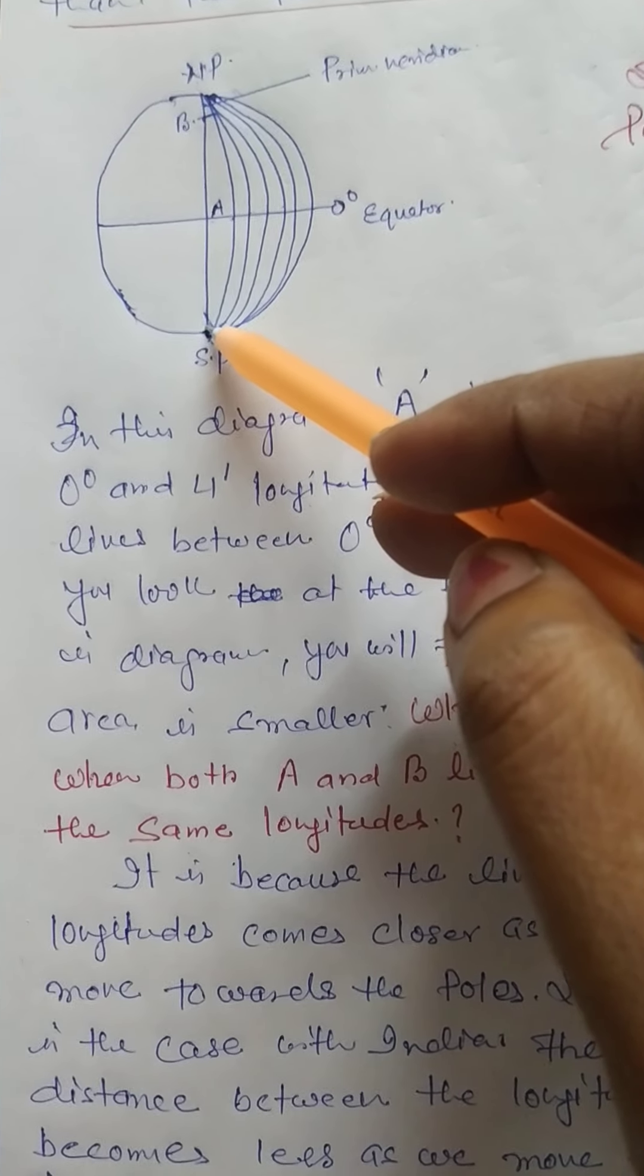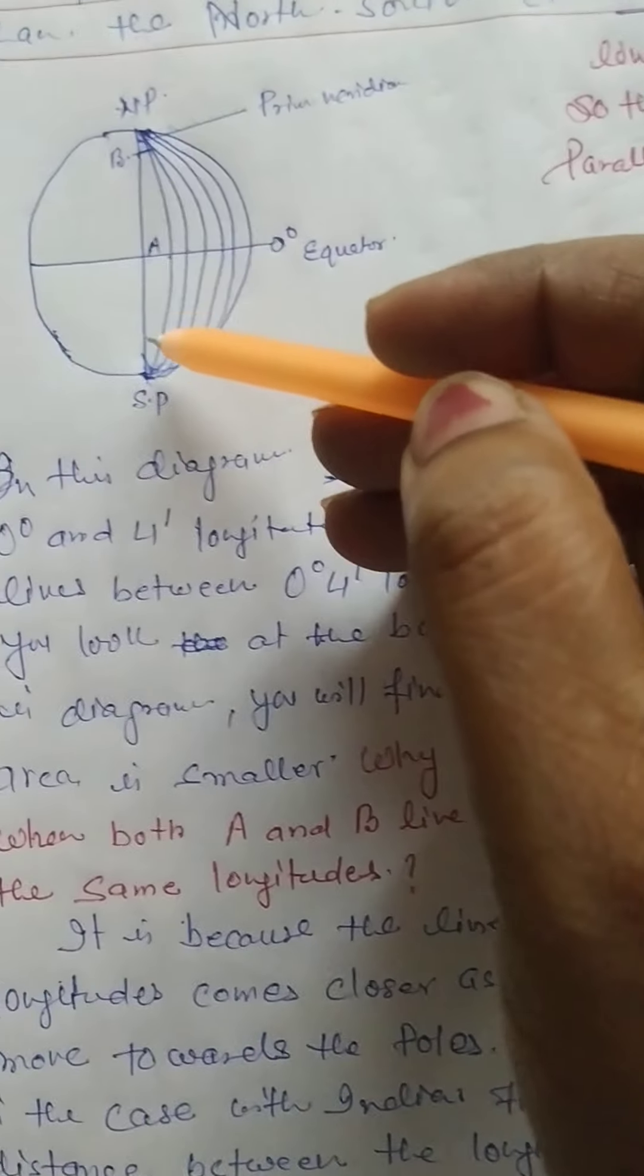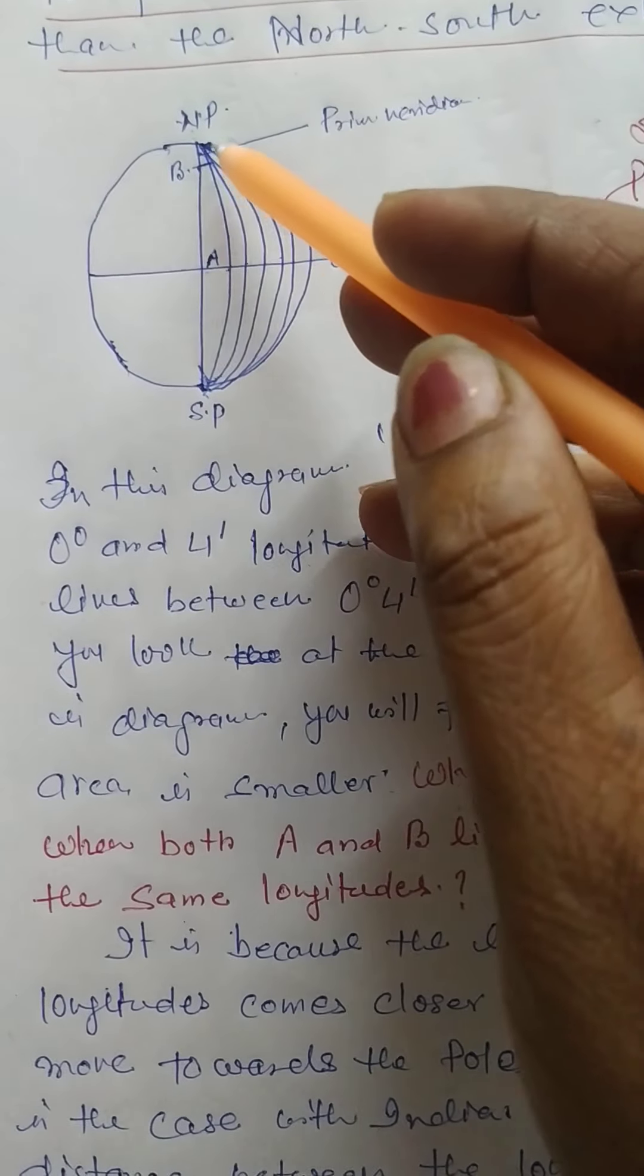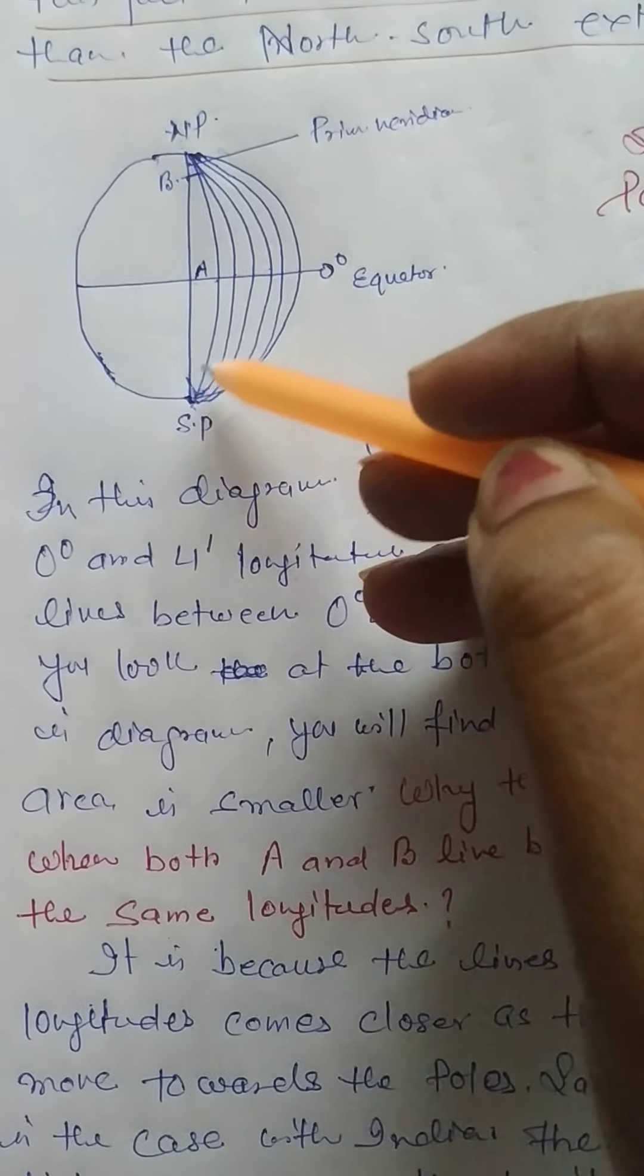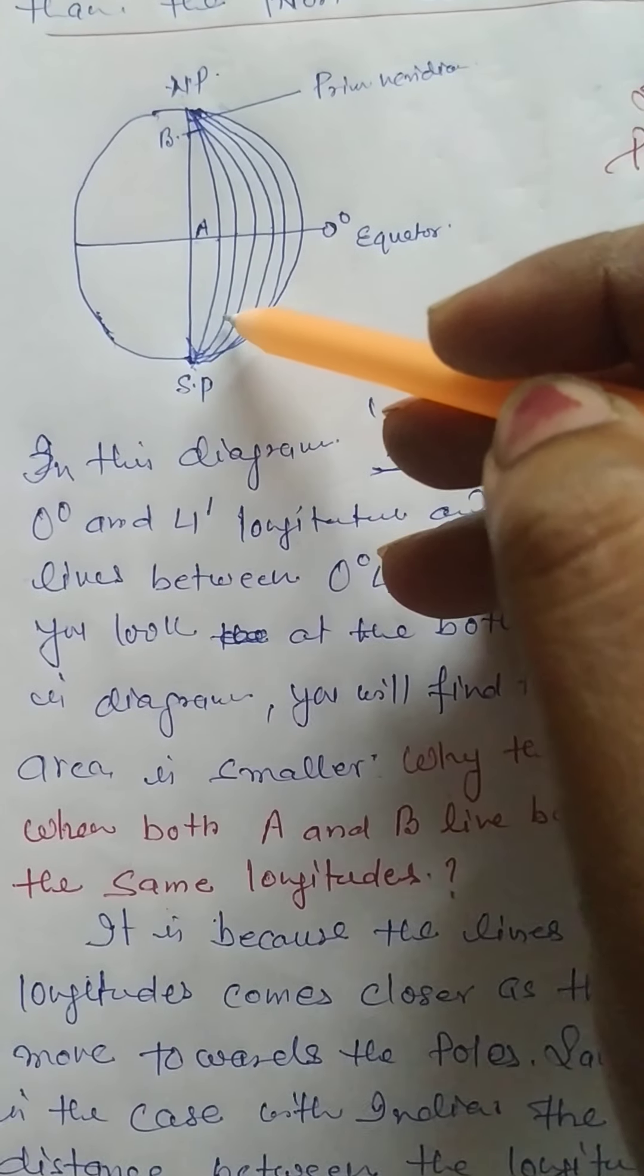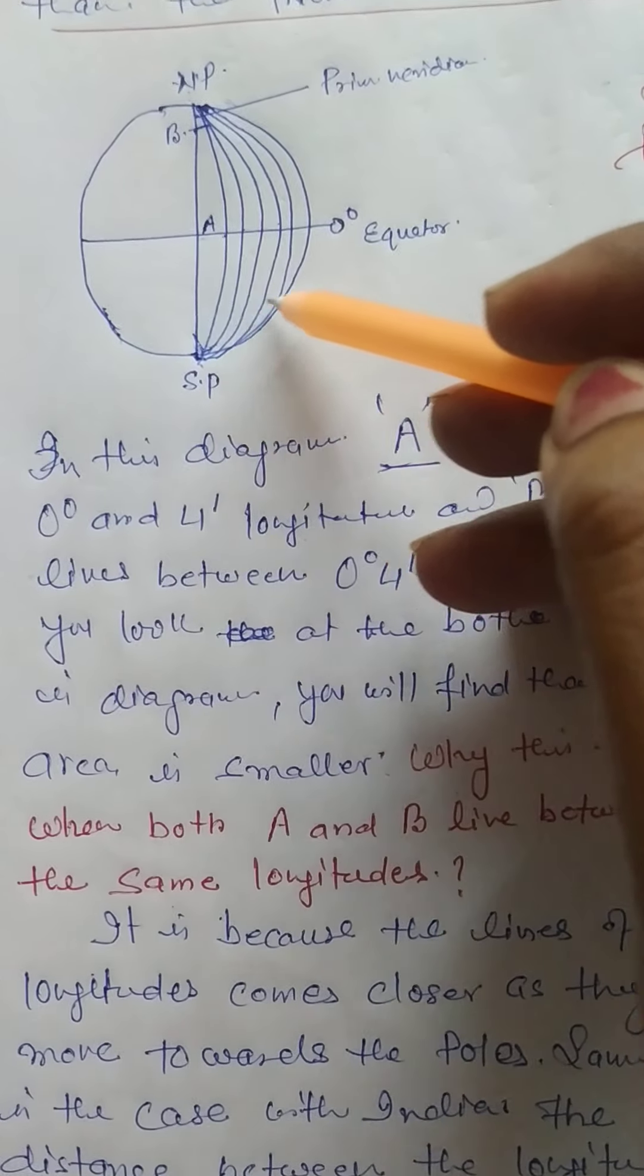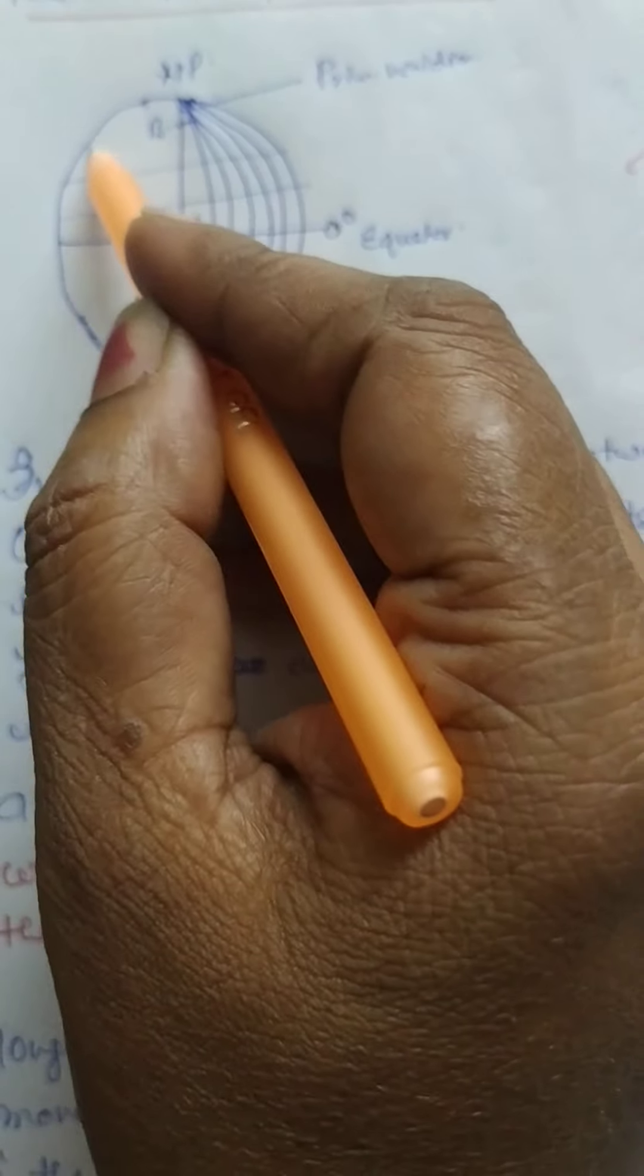Whereas longitudes are vertical imaginary lines drawn on the globe which join north pole and south pole. And when they move from the equator to the north pole or equator to the south pole, these lines become closer to each other.